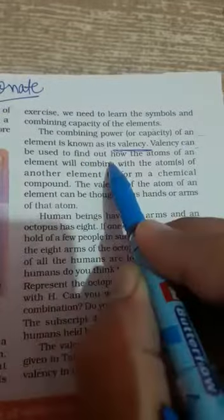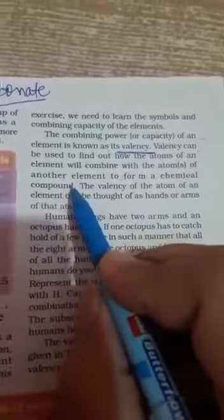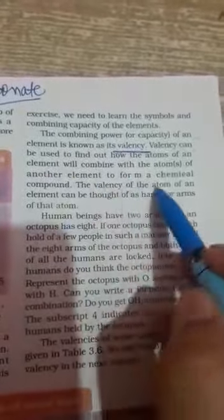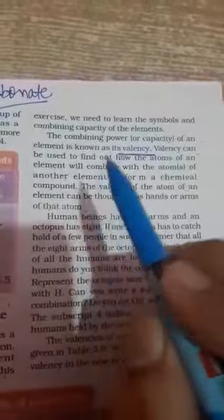The valency can be used to find out how atoms of an element will combine with atoms of another element to form a chemical compound. When a chemical compound is formed, one element combines with another element and they share their valencies. The valency of an atom can be thought of as the hands or arms of that atom.